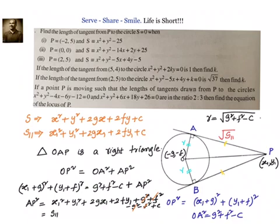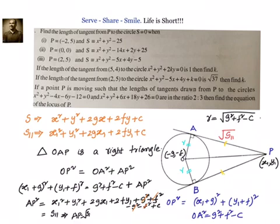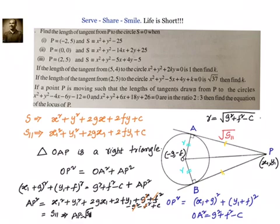What is the meaning of S₁₁? Substituting the value of (x₁, y₁) in the circle S = 0 gives S₁₁. That means AP = √S₁₁, or the length of the tangent drawn from an external point to a circle is given by √S₁₁. Now let us go ahead and try to solve some problems related to this.